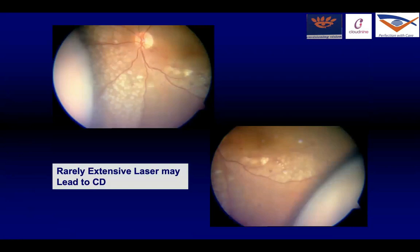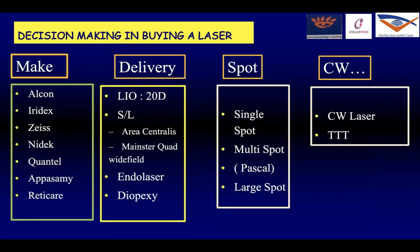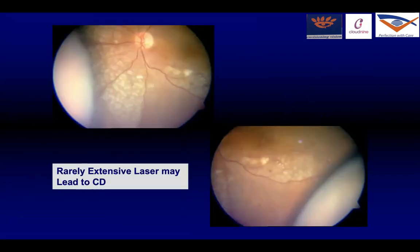If you do a lot of laser at one go, you may end up with choroidal detachment. So it is better to divide the PRP into different sittings — we normally do it in two or three sittings. But with a pattern laser, you can actually do it in one or at most two sittings.